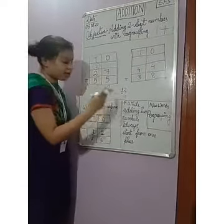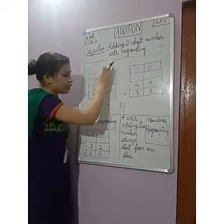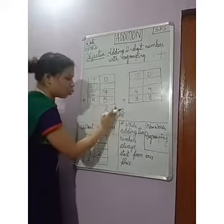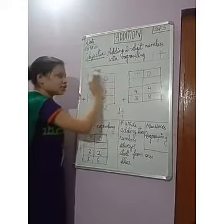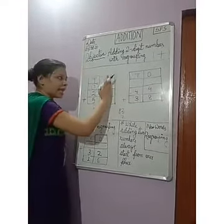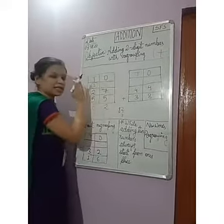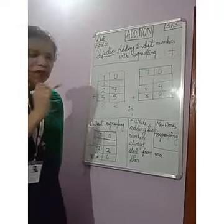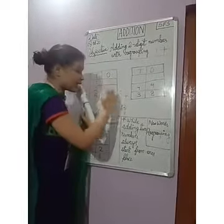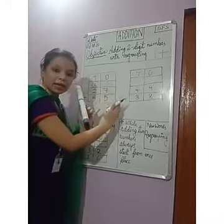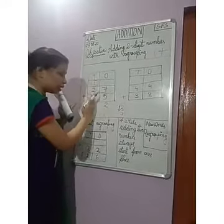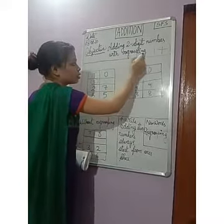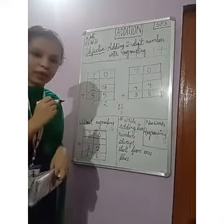Let us read again: in the 1's place, 7 and 5 becomes 12, and the 1 is transferred from the 1's place to the 10's place. This 1 is known as the regroup carryover. The process of sending or transferring a number from one column to the other is known as regrouping.